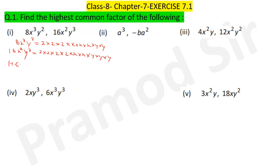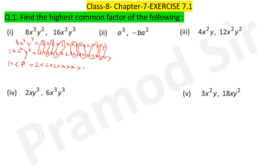HCF — short form is HCF. Match the factors: three 2s are common, x appears two times in the second term so two times match, and y appears two times in the first term so two times match. Therefore: 2×2×2 = 8, x² and y², giving HCF = 8x²y².